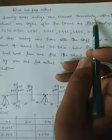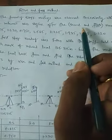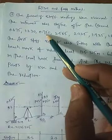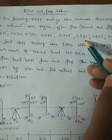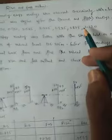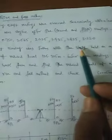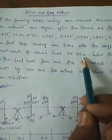First, see the question here. The following staff readings were observed successfully with a level; the instrument was shifted after the second and fifth readings. The readings given are 0.675, 1.230, 0.750, 2.565, 2.225, 1.935, 1.835, 3.220. These are the readings taken by the Dumpy level. The first staff reading was taken with the staff held on a benchmark of reduced level 125.325 meters.